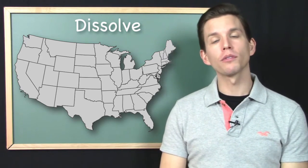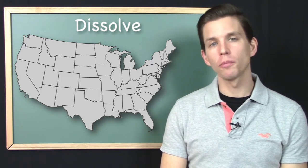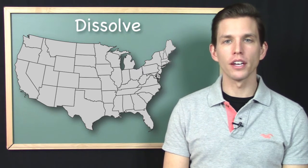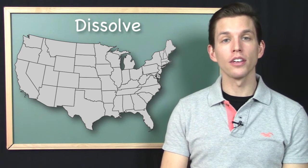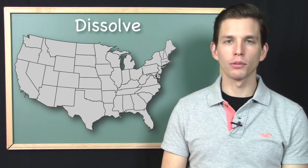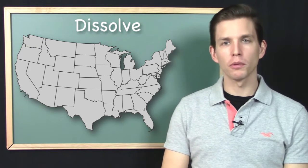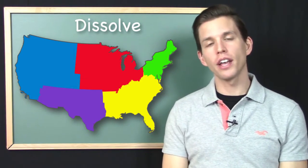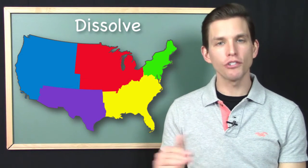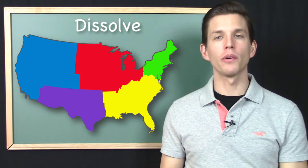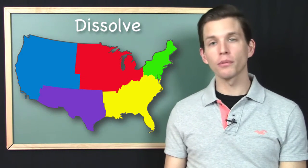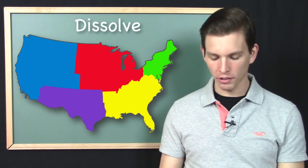Well in order to produce that result I can use the Dissolve geoprocessing function. I can say I want to dissolve the geometry here based on the information in the attribute table in that field that tells me what region the state is in. So every feature in this data file that has the same entry in that field is going to get the geometry merged together. So it's a pretty simple operation as most of these geoprocessing operations are.